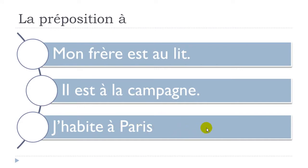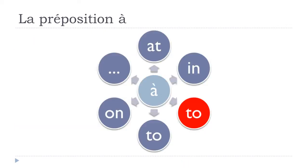So if you want to translate this 'in' concept into English, you would use À — combined with articles as needed: au lit, à la campagne, à Paris. Now let's see another use of À: 'to'.